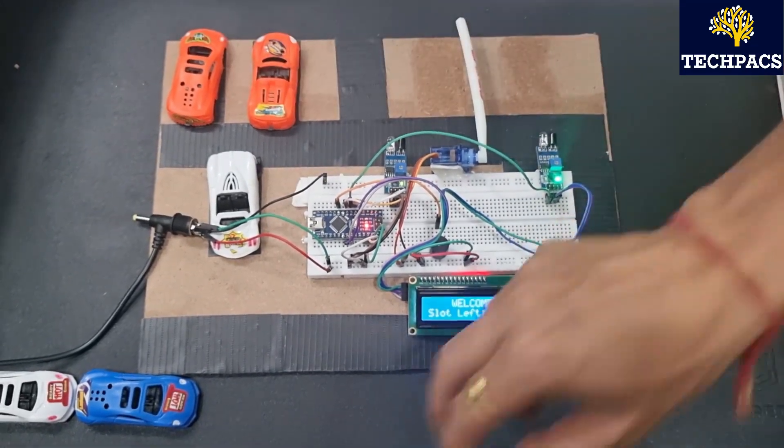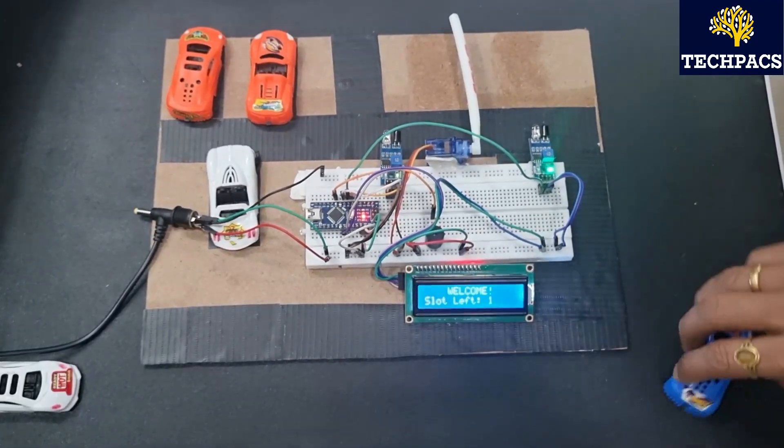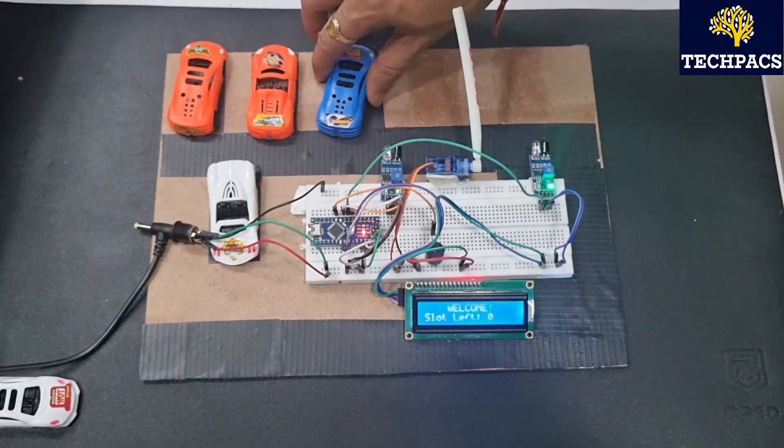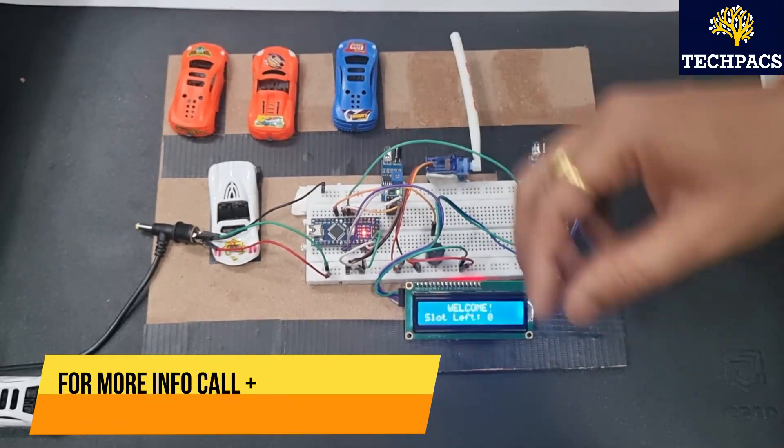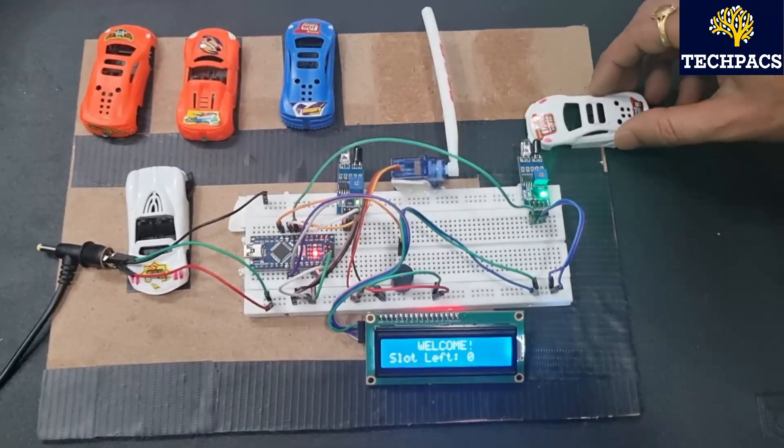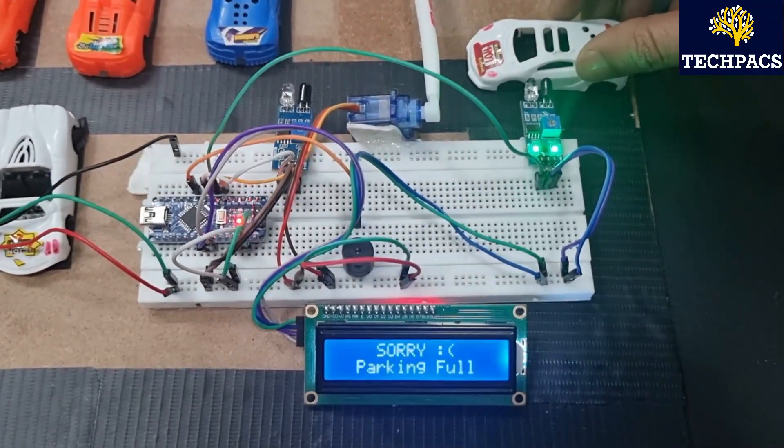Now we are parking another car. Now you can see it on the LCD that the slots left are zero. Now if we bring another car over here, it shows sorry parking full. So the entry to the car is denied. This is how this project works.